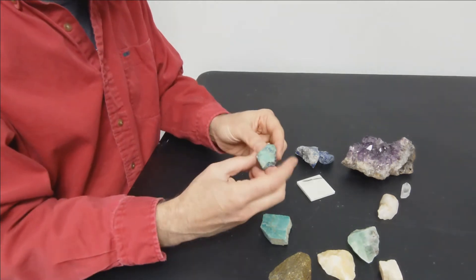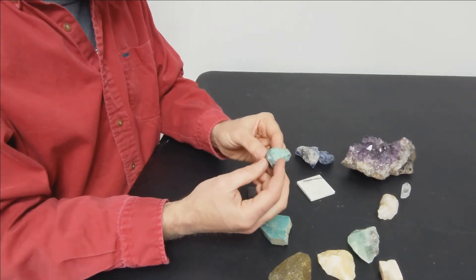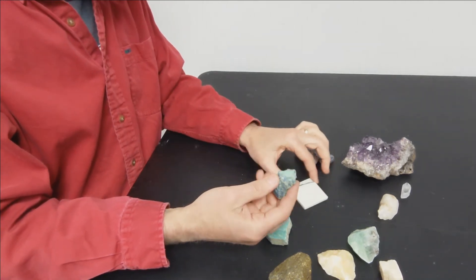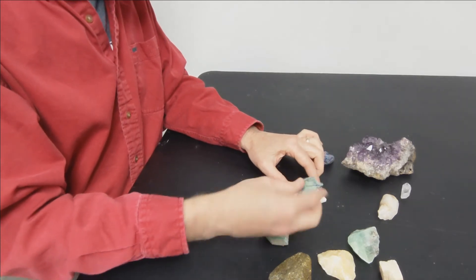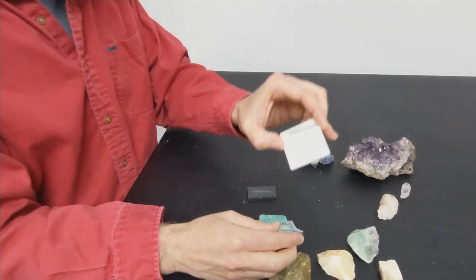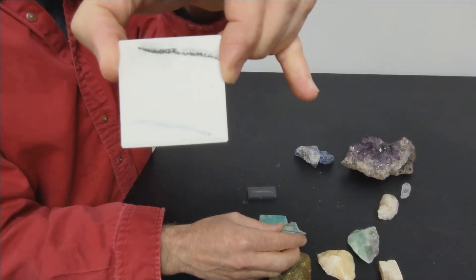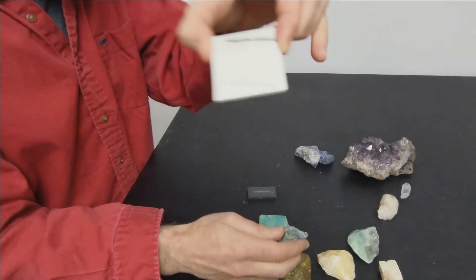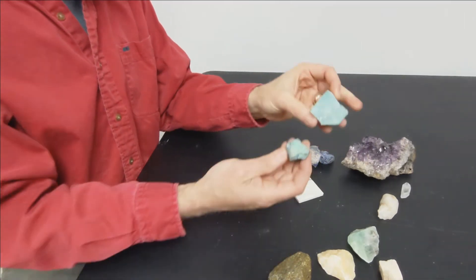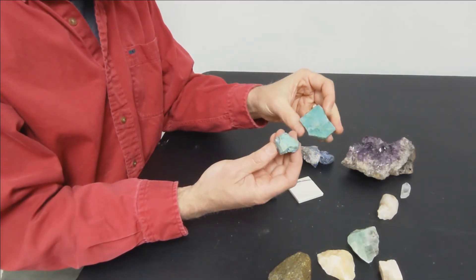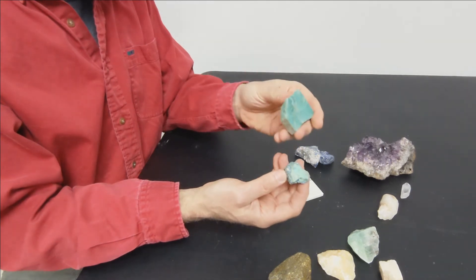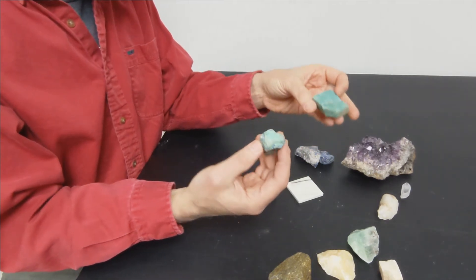On the other hand, that other green mineral that I have, you can see here, if I rub it down along the streak plate, it produces a very distinctive bluish green streak. And so while on color these two minerals may be very similar, the streak shows that this one has a white streak and this one has a green streak.